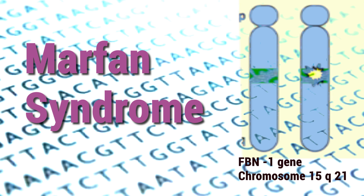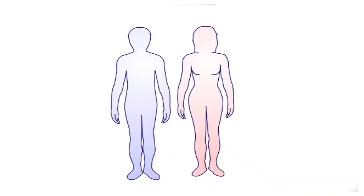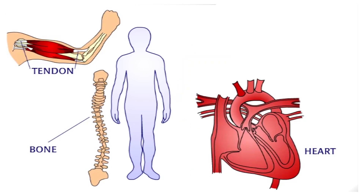Marfan syndrome is a disorder that weakens the connective tissues of the body. Connective tissues connect, bind, support and separate other tissues or organs. Like tendons and ligaments that keep bone and muscle together.